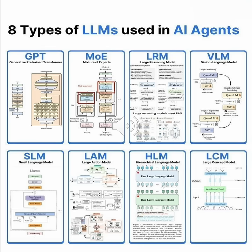LAM, large action models, are the doers of the AI world. They don't just understand and generate text — they take action. They can navigate interfaces, execute commands, and interact with tools. This is where AI agents become truly autonomous, turning understanding into real-world actions.